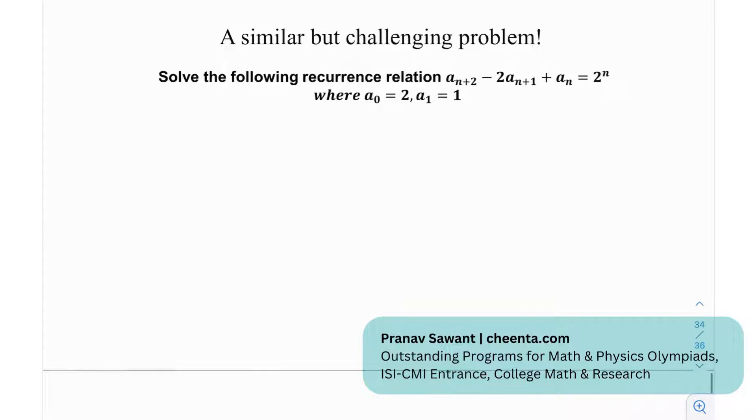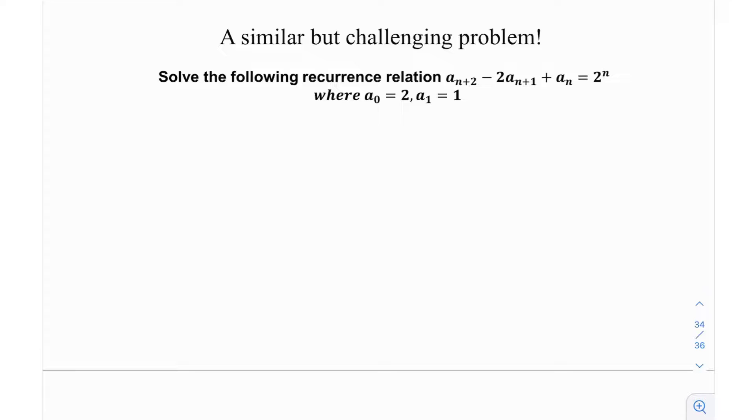At the end we have a similar but challenging problem. Solve the following recurrence relation: aₙ₊₂ - 2aₙ₊₁ + aₙ = 2ⁿ, and the initial conditions a₀ and a₁ are given. If you try this out and are able to make any progress or solve it, let me know in the comment section. Until then, I'll see you in the next video. Thank you very much and bye bye.